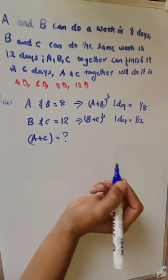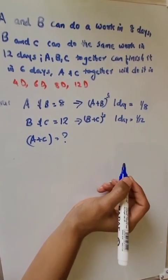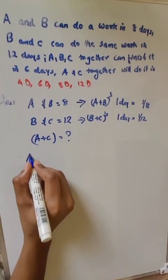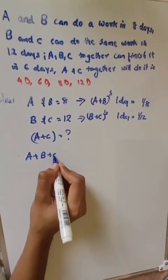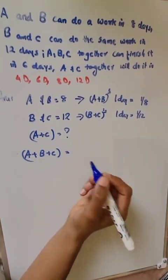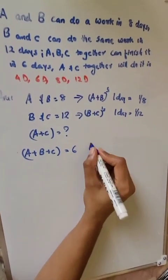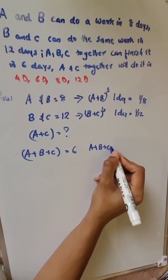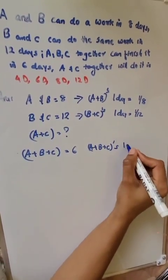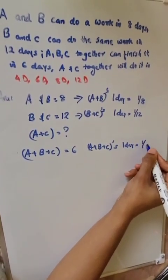We have to find out how many days A and C can finish the work. Also given, A, B, and C do this work in 6 days, so A, B, and C's one day work is 1 by 6.